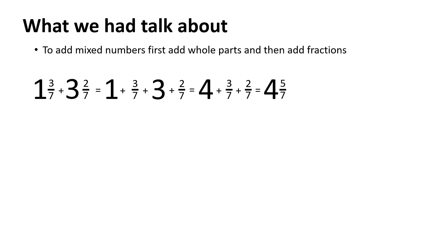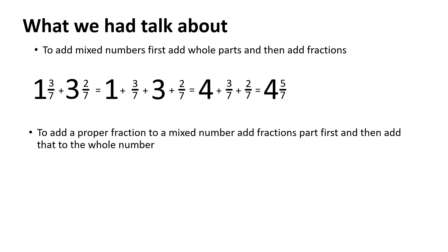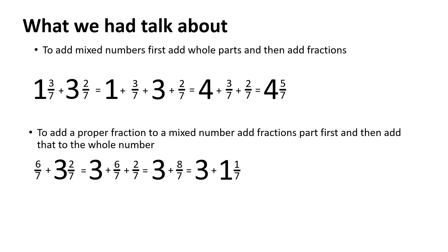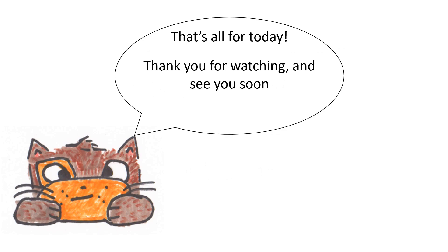To add a proper fraction to a mixed number, we can add the fractions first and then add the result to the whole number. For example, to add 6 sevenths and 3 and 2 sevenths, we add 6 sevenths and 2 sevenths first: 6 sevenths plus 2 sevenths is 8 sevenths, which is 1 and 1 seventh. We add that to 3, so the total is 4 and 1 seventh. That's all for today! Thank you for watching and see you soon in the next math adventure. Math is fun!